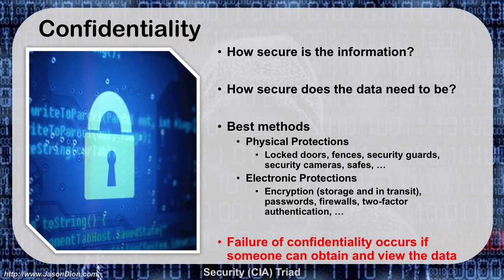First, we have confidentiality — how secure is my information? And how secure does the data need to be? For example, if you go to my public-facing website, jasondion.com, you're going to see a web page with information that is not confidential. I'm okay with that because I want you to see it. But if I have a file in a subdirectory — maybe my social security card — I don't want you to have that. I can use encryption, passwords, firewalls, and two-factor authentication to add to my confidentiality.